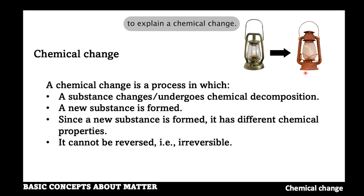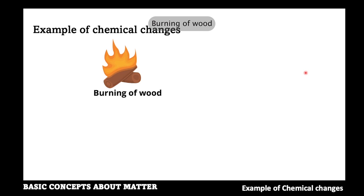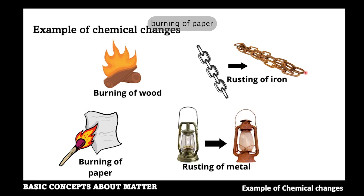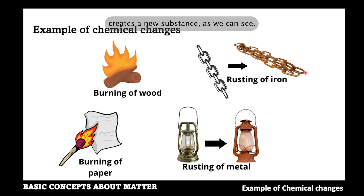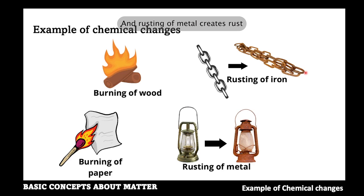Here are examples of chemical changes: burning of wood, rusting of iron, burning of paper, and rusting of metal. Each of these examples creates a new substance. Burning of wood creates charcoal, burning of paper leads to ash, and rusting of metal creates rust.